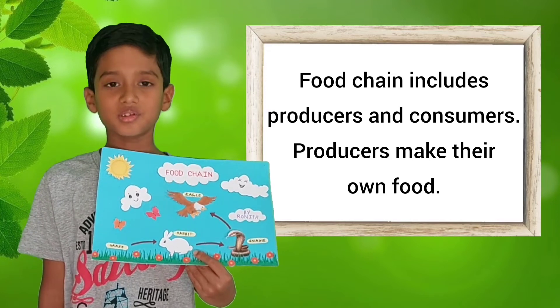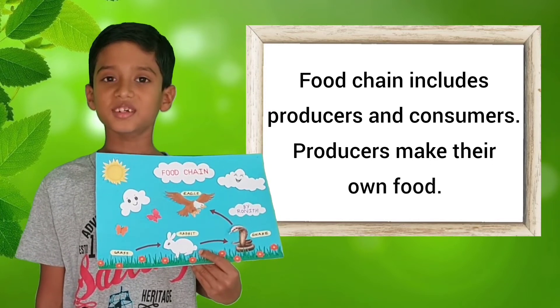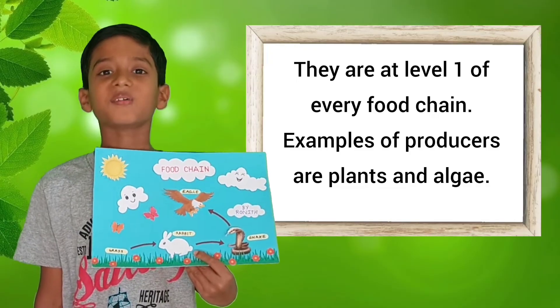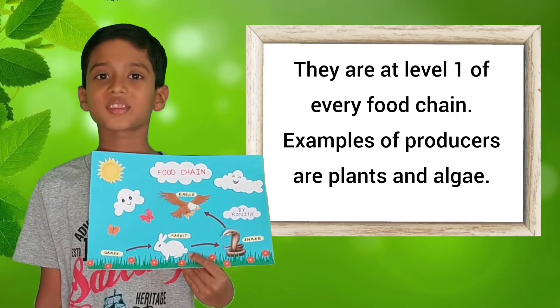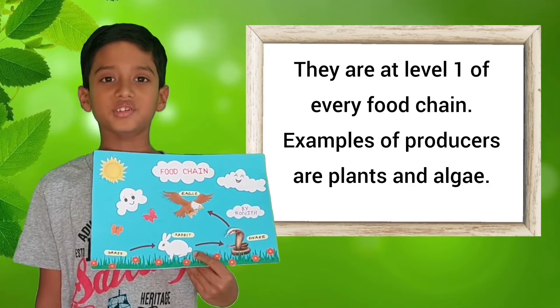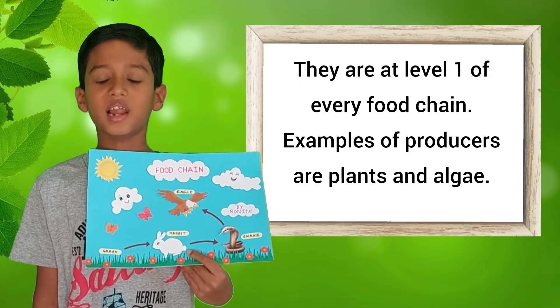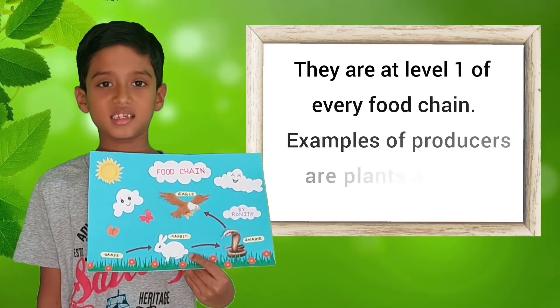Producers make their own food. They are at level 1 of every food chain. The examples of producers are plants and algae.